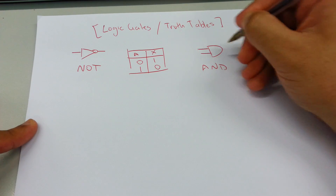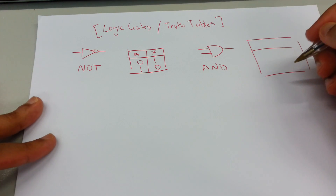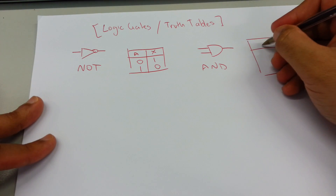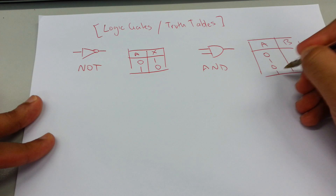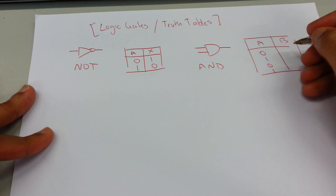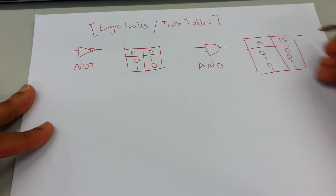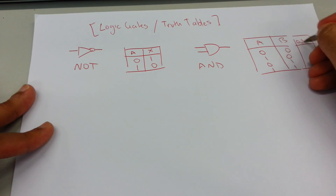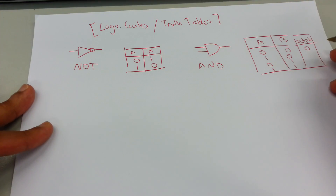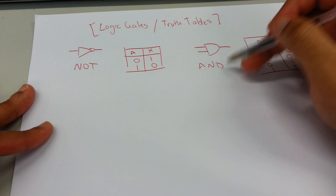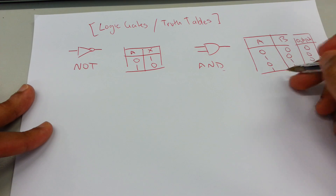For AND, the symbol is like this. So the table — I would say A and B. So A is: 0, 1, 0, 1 and B is: 0, 0, 1, 1. And then your output: zero and zero gives you zero, one and zero gives you zero, zero and one gives you zero, and one and one gives you one.